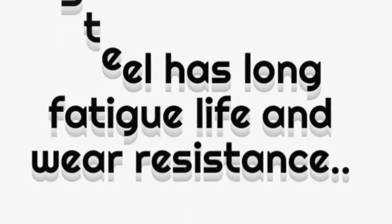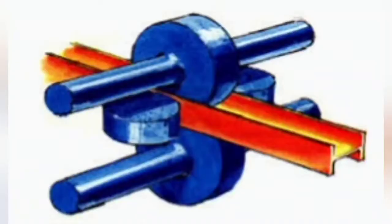Steel used to make rails must be resistant to fatigue or surface cracking. The aim is for the steel to have a long fatigue life. Rail steel is chosen to achieve a balance between fatigue life and wear resistance.